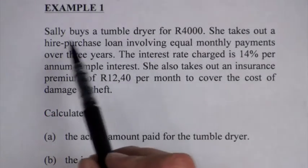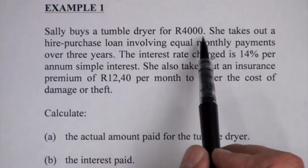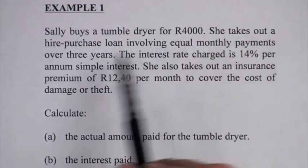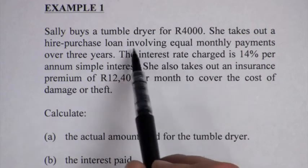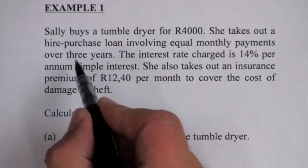This first example says that Sally buys a tumble dryer for 4,000 Rand. She takes out a hire-purchase loan involving equal monthly repayments over a three-year period.